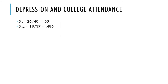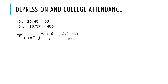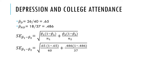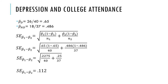We have the proportion from the history-of-depression group of 0.65 and no depression at 0.486. We plug these in to find our standard error. Group 1 is the history-of-depression group and group 2 is the no-depression group. We plug those numbers into the formula, reduce, calculate, and we get a standard error of about 0.112.